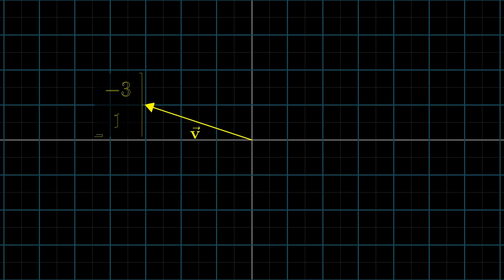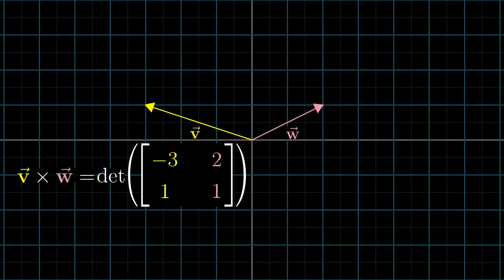As an example, let's say v has coordinates [3, 1] and w has coordinates [2, 1]. The determinant of the matrix with those coordinates as columns is negative 3 times 1 minus 2 times 1, which is negative 5.